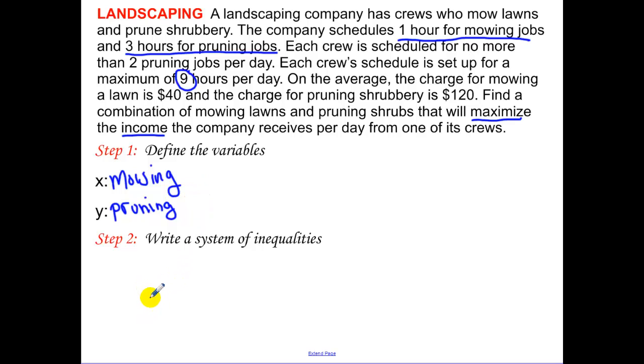Now a system of inequalities, and as I was reading it, I kind of highlighted a few things for you guys. One hour for mowing and three hours for pruning and a nine hour day. So 1x plus 3y, that's going to be less than or equal to nine hours per day. They also tell me each crew is scheduled for no more than two pruning jobs each day. That's all they can do. So pruning, y has to be less than or equal to two. But think about it, y also has to be greater than or equal to zero. And same thing with our mowing, greater than or equal to zero.